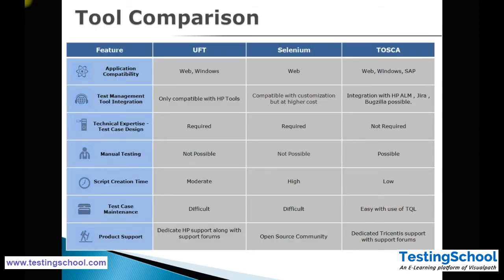This is a comparison between UFT, Selenium, and Tosca. UFT supports only web and Windows applications, while Tosca supports web as well as SAP applications. For UFT, the test management tool is HP ALM. Selenium does not have a built-in test management tool — you have to use other tools available in the market. Tosca provides integration to both HP ALM and Jira, as well as other popular tools like Bugzilla.